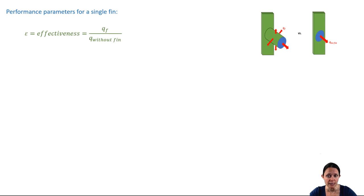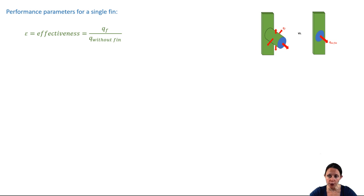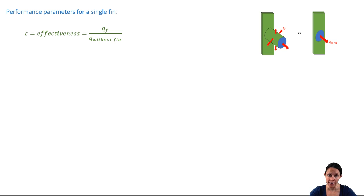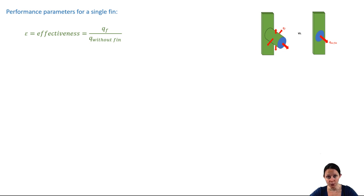The fin effectiveness is the ratio of the heat transfer rate with the fin to the heat transfer rate without the fin. While you might think that the addition of a fin will always result in an increase of heat transfer, the fin itself actually represents resistance to conductive heat transfer. If we have a fin made of a material with a low thermal conductivity, the heat transfer rate actually may be lower than if we didn't have a fin at all.